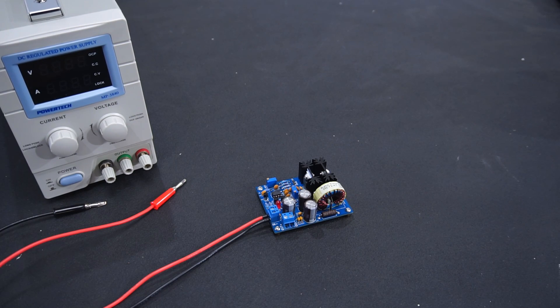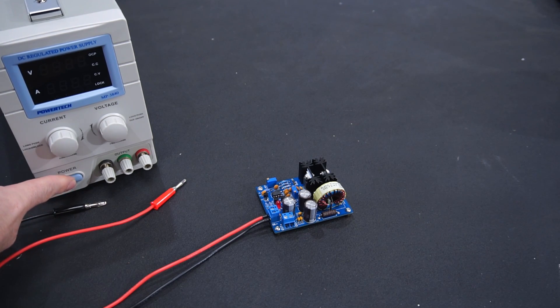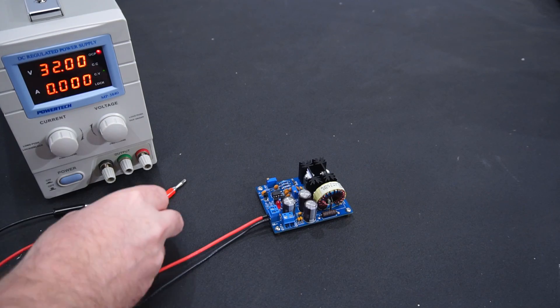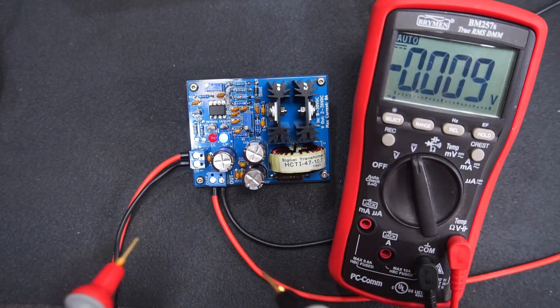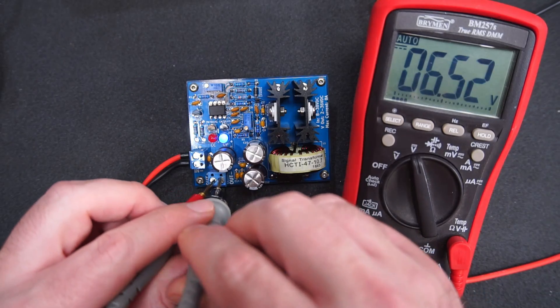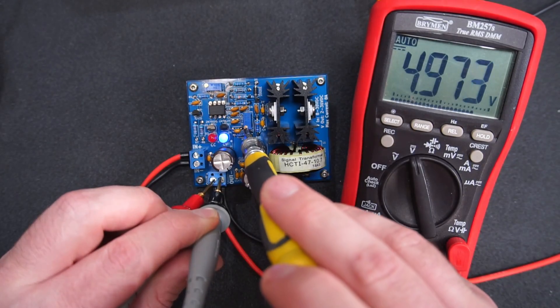For the purposes of this video I'll be powering the buck converter from my variable power supply which is set to output 32 volts. I'll connect my meter to the output of the buck converter and adjust the voltage by turning the trimmer.